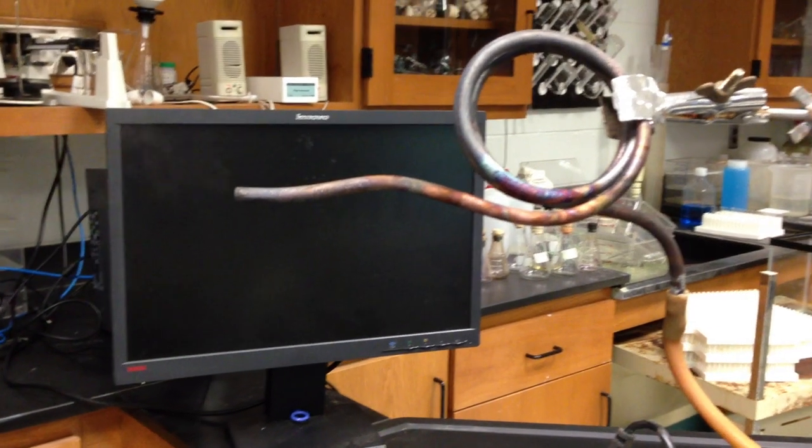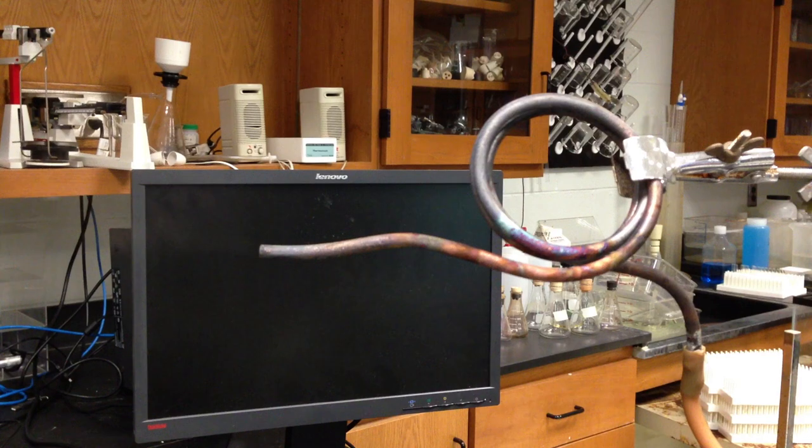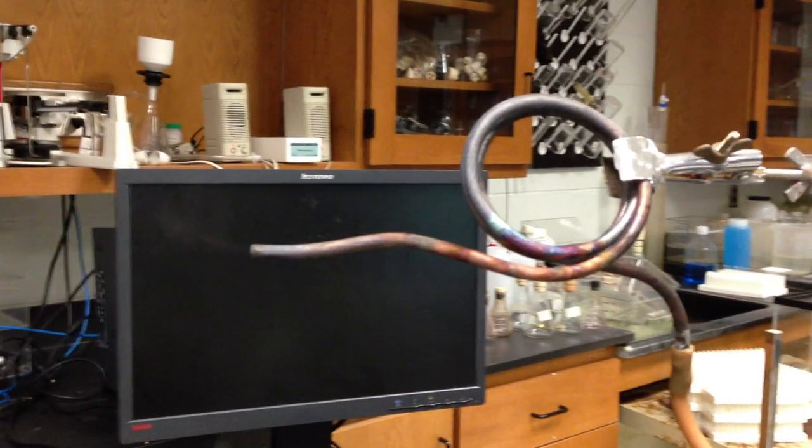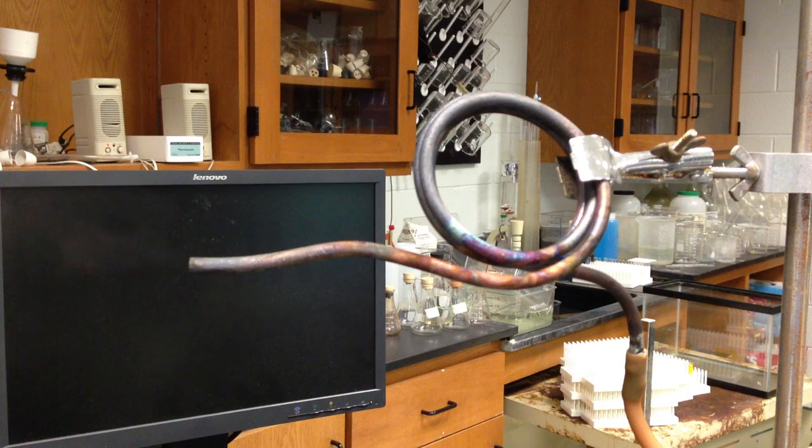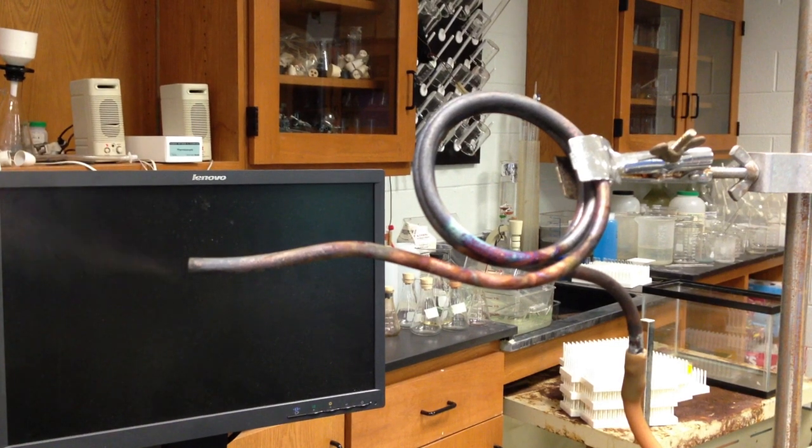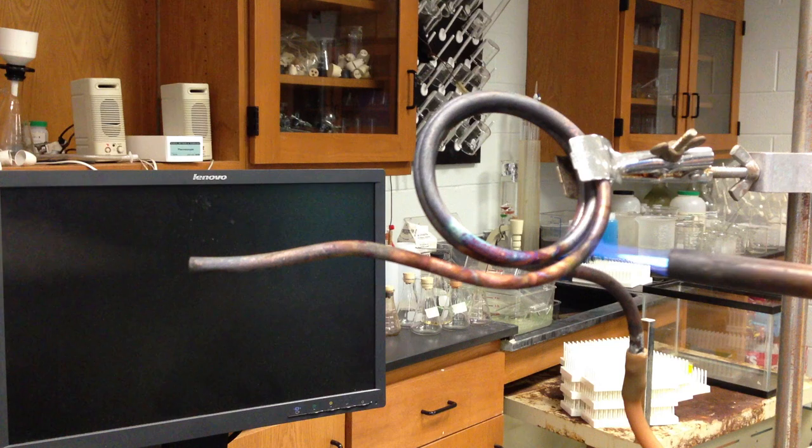Now I'm going to change this up a little bit. I'm going to take this copper coil and position my camera so you can see the fog coming out. I think that's pretty good right there. What I'm going to do is take a torch and heat this copper coil.